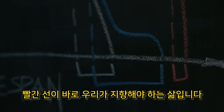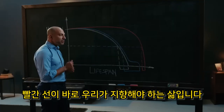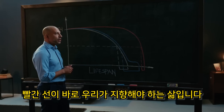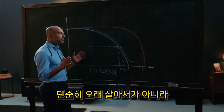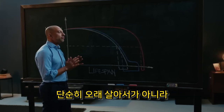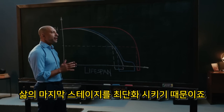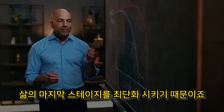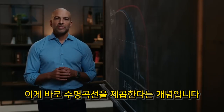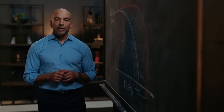The red line is where we want to be — not just because you're living longer, but because you're spending a far narrower fraction of your life in the final stages of decline. This is what it means to square the longevity curve.